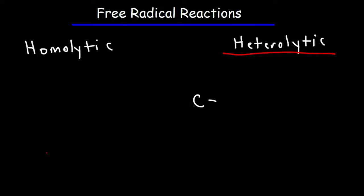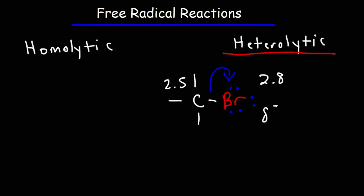Let's consider the carbon-bromine bond. Carbon likes to form four bonds. So when the carbon-bromine bond breaks, which element will acquire the two electrons? To answer that we need to consider electronegativity. The electronegativity of bromine is about 2.8; for carbon it's 2.5. So bromine is more electronegative than carbon. Therefore when that bond breaks, bromine is going to pull the electrons toward itself. Bromine has a partial negative charge and carbon has a partial positive charge when bonded together. When that bond breaks, we get a carbocation and a bromide ion. This is an example of a heterolytic bond cleavage.